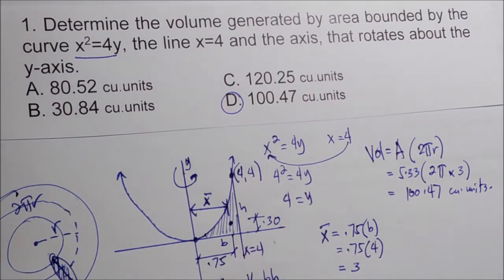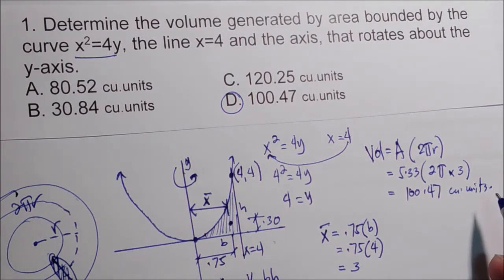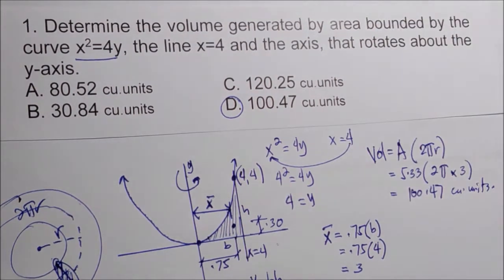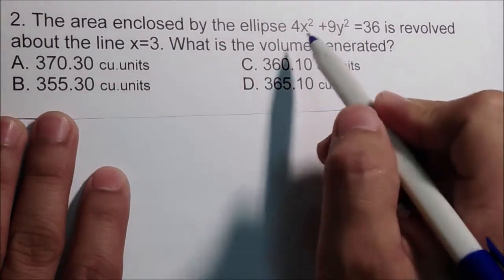So no integration is needed when dealing with a parabola or ellipse — we have ready formulas. We only use integration when the equation is more complicated. For example number two: the area enclosed by the ellipse 4x² + 9y² = 36 is revolved about the line x = 3. What is the volume generated?